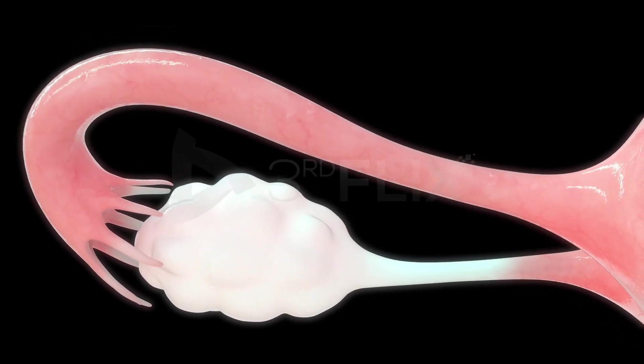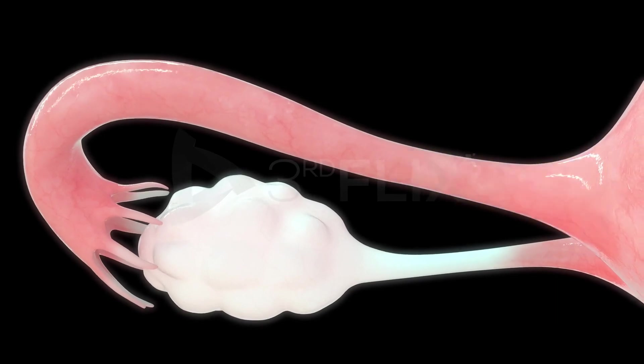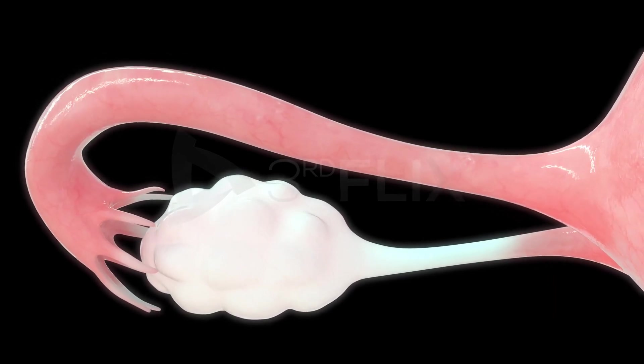The ampulla leads into the isthmus. The isthmus is the narrow, last part of the fallopian tube.